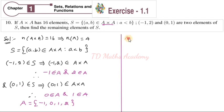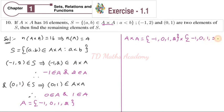Now you have to find A cross A. A = {-1, 0, 1, 2} cross A = {-1, 0, 1, 2}. Since A has 4 elements and A has 4 elements, n(A cross A) = 16 elements. Let us find all 16 ordered pairs of A cross A.